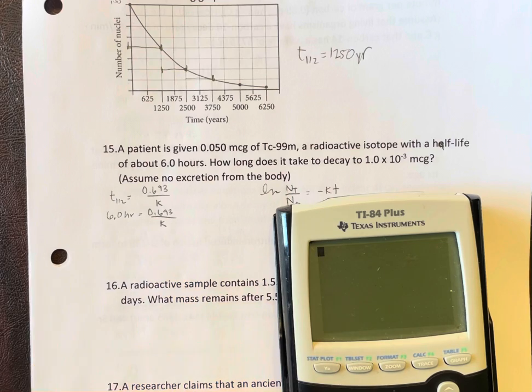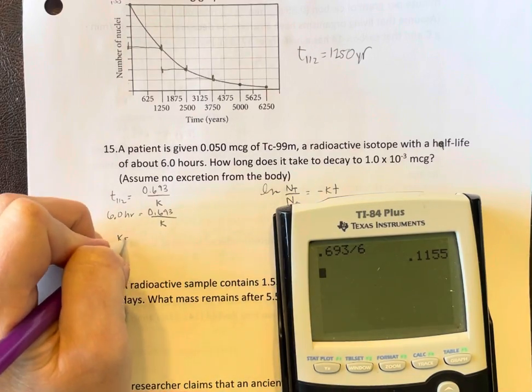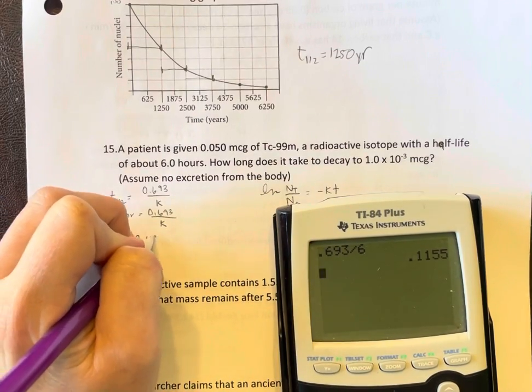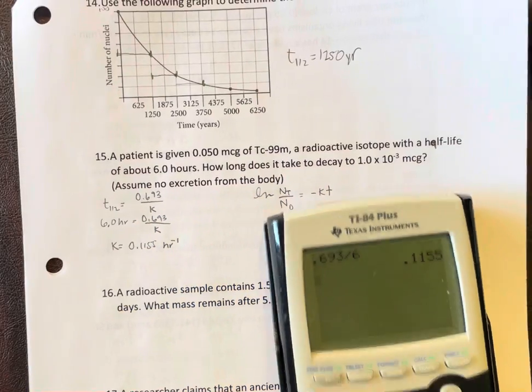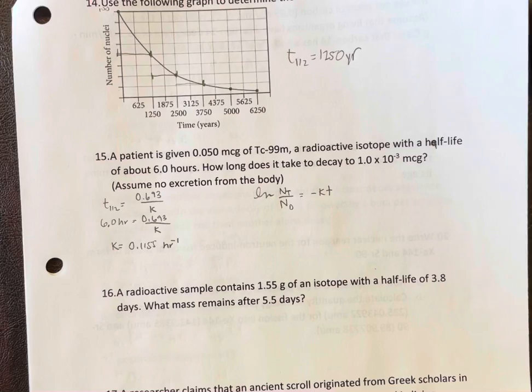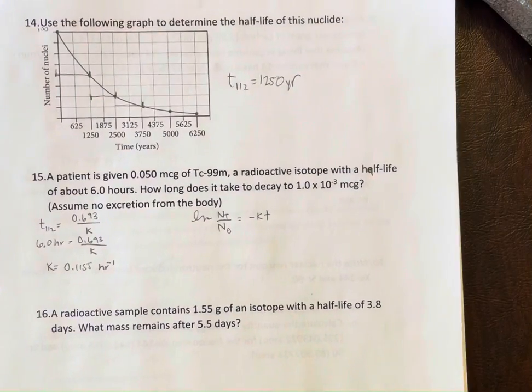To do this, we need 0.693 divided by 6. Do not take 6 divided by 0.693 - that is not correct. 0.1155, and again our units for k in a first order are inverse time.